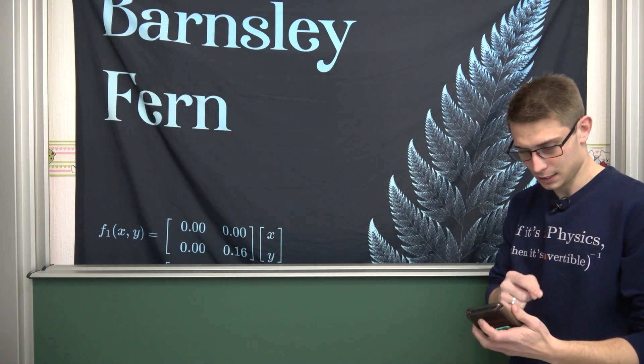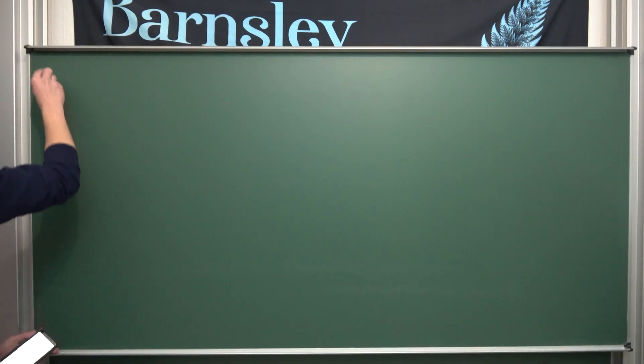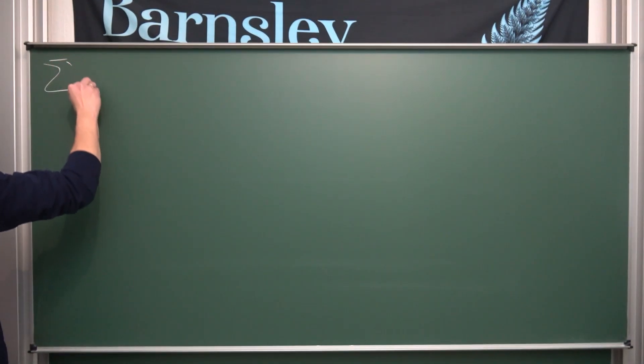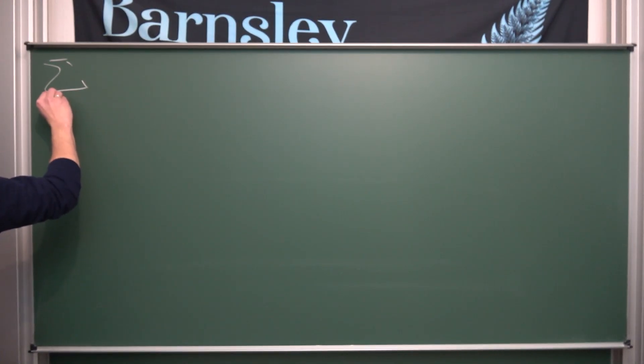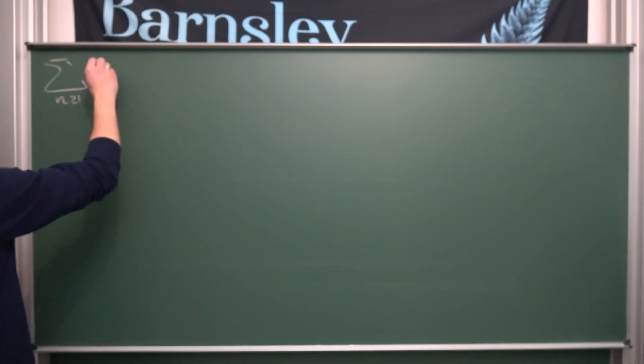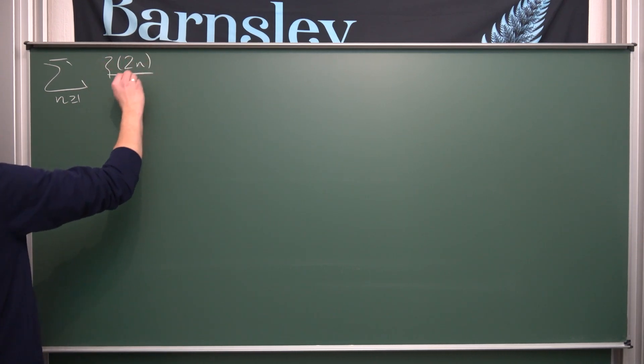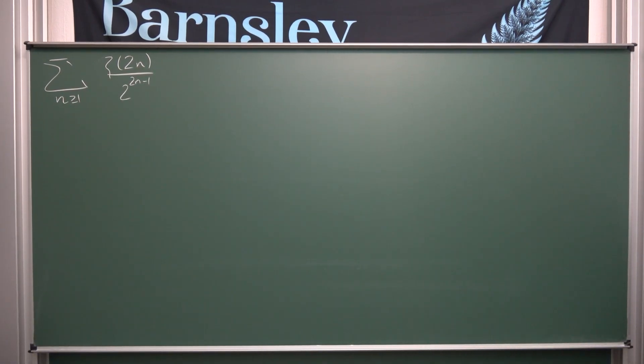So the series we are going to take a look at today is the following one: we are going to have an infinity sigma, that's an ugly sigma I'm terribly sorry, where n is greater or equal to 1, so it's bounded between 1 and infinity, of Riemann's zeta of 2n divided by 2 to the 2n minus 1th power. And there we go.